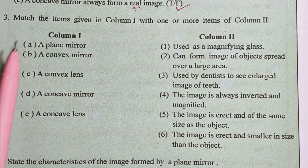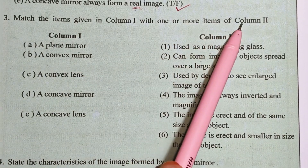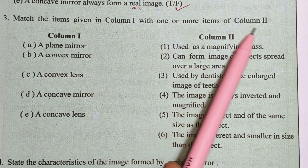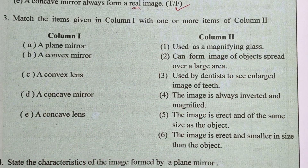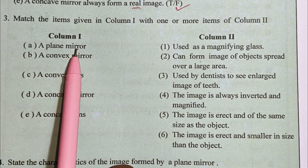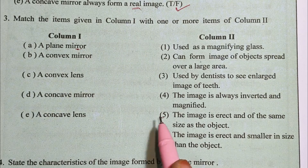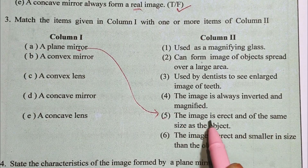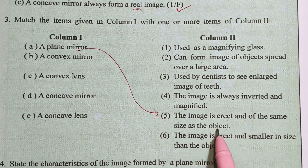Question 3. Match the items given in column 1 with one or more items of column 2. Number A: The plane mirror — the image is erect and of the same size as the object.